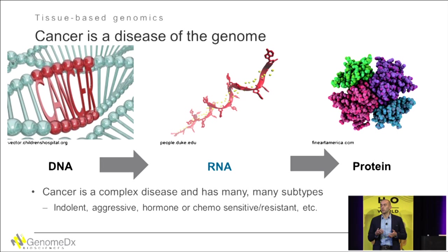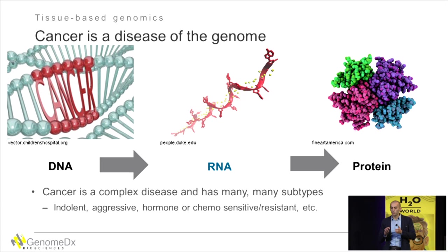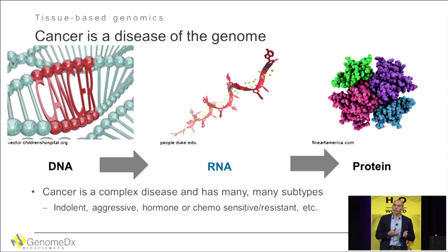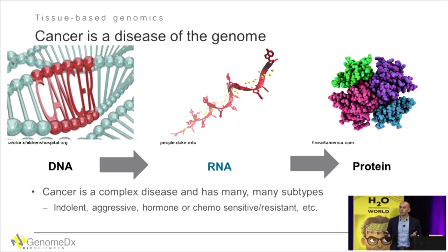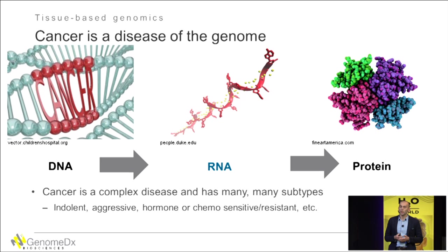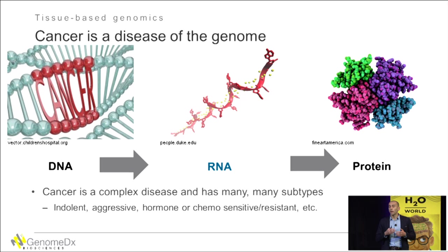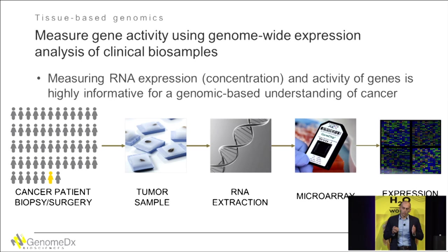Cancer is a genomic disease. It happens due to mutations in the DNA. In normal cells, DNA has all the information for cellular function. It gets copied to RNA, and different concentrations of RNA produce different levels of protein. In cancer, mutations in DNA cause alterations in the concentration of RNA, which alters protein production, consequently resulting in cells growing faster and damaging neighboring cells. Cancer itself is a complex disease with many subtypes — indolent cancer, aggressive cancer, cancer sensitive to radiation or resistant to hormone treatment — and understanding the genomics behind cancer helps us understand how each subtype behaves.